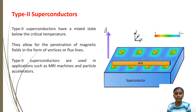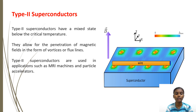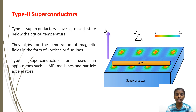Type 2 superconductors can tolerate higher magnetic fields before losing their superconducting properties. They have a mixed state below the critical temperature, allowing for the penetration of magnetic fields in the form of vortexes or flux lines. Type 2 superconductors are used in applications such as MRI machines and particle accelerators.